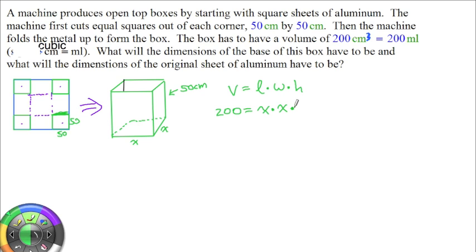And then our height is 50 centimeters. So we have x times x times 50 centimeters, giving us cubic centimeters. This isn't too bad. We get 200 equals 50x squared. Divide both sides by 50, we get 4 equals x squared.